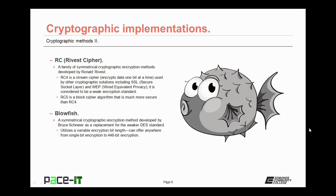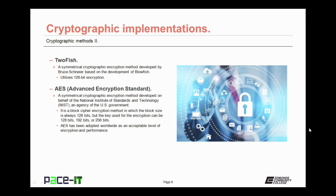RC5 is a block cipher algorithm that is much more secure than RC4. Then there is Blowfish, a symmetrical cryptographic encryption method developed by Bruce Schneier as a replacement for the weaker DES standard. It utilizes a variable encryption bit length, offering anywhere from single-bit encryption to 448-bit encryption. While Blowfish can be effective, it can also be difficult to work with. Twofish is a symmetrical cryptographic encryption method also developed by Bruce Schneier, based on Blowfish. Twofish utilizes 128-bit encryption and is easier to work with than Blowfish.